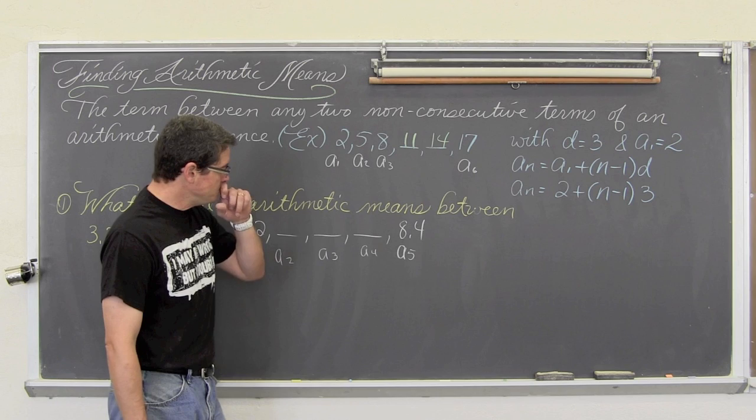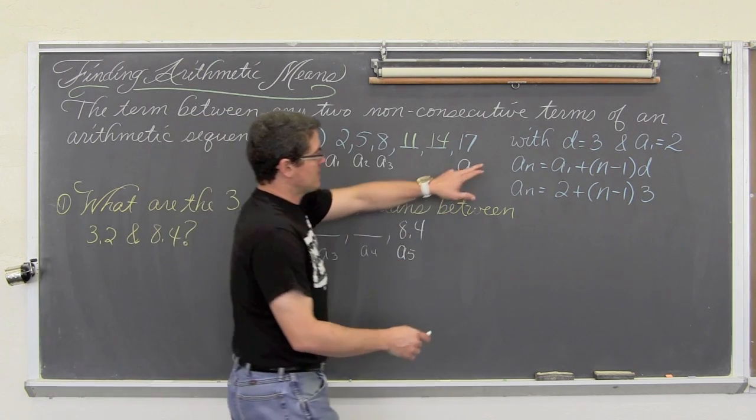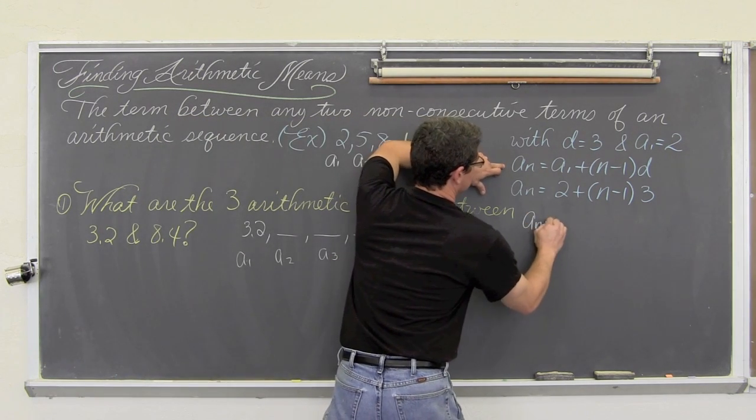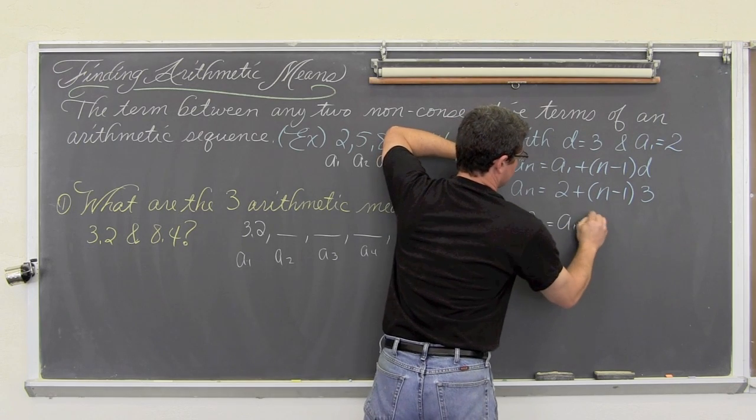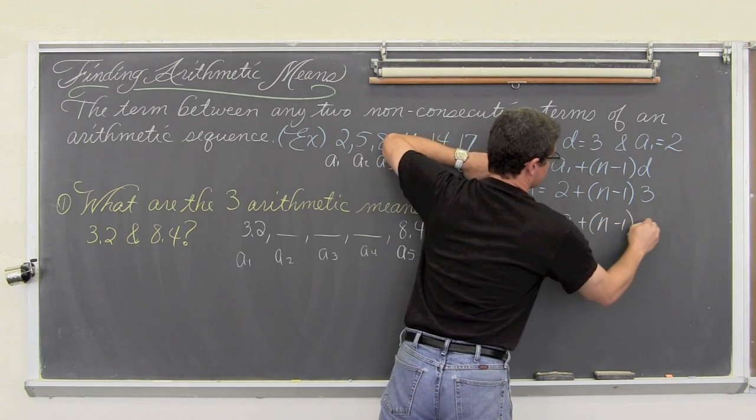So we are going to copy this down: a sub n equals a sub 1 plus n minus 1 times d.